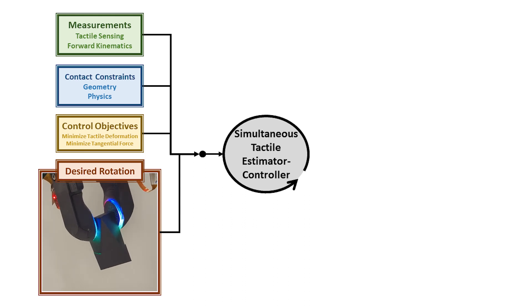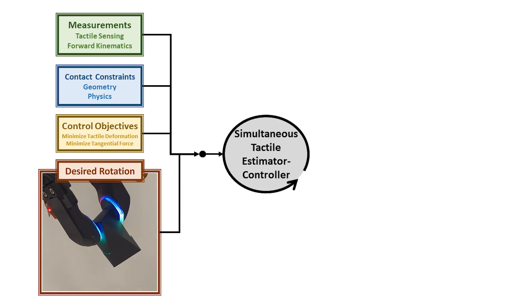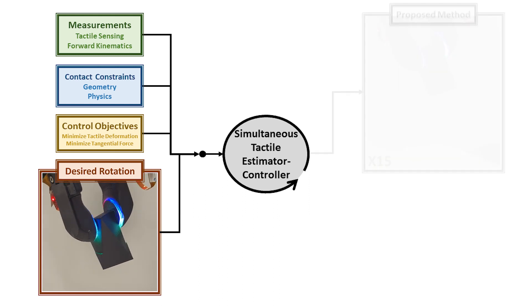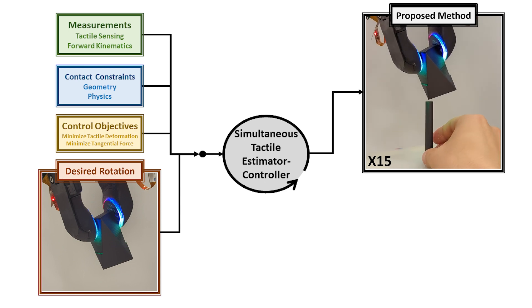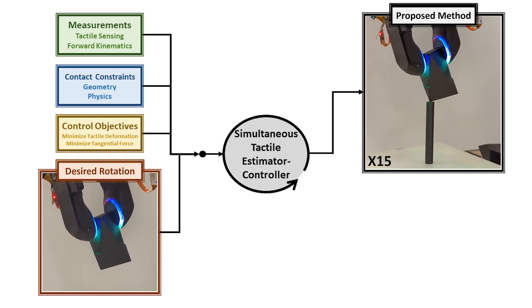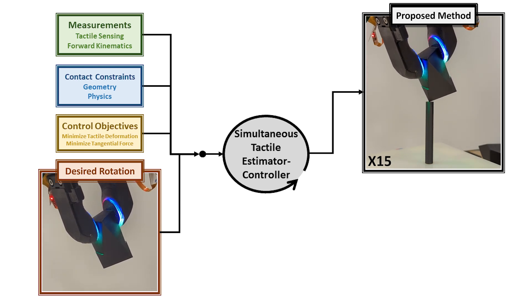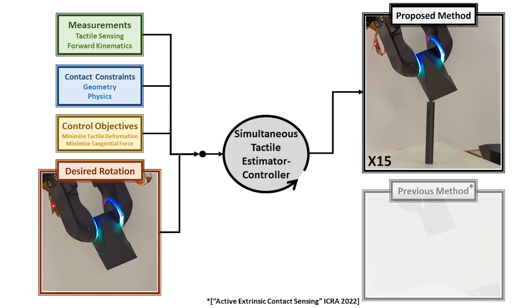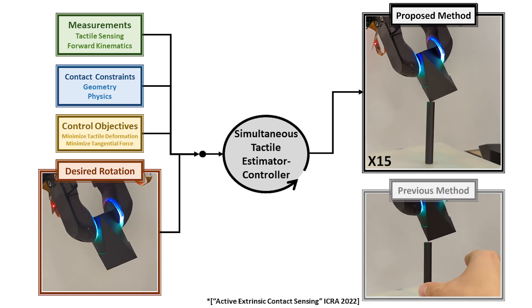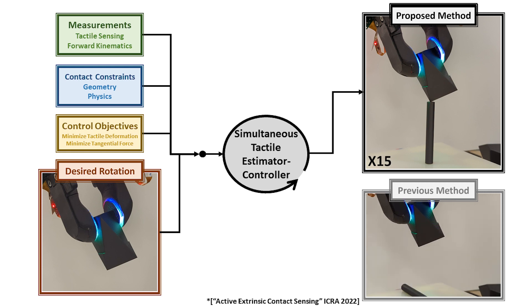We also input the desired object rotation based on where we want to tilt the object. As an output, the system outputs the estimated contact states for the past time steps and the control sequence for the future time steps. The video shows that, without prior knowledge of the location of the external contact, the system can pivot the object without moving the vertical rod. In contrast, if we use the controller from prior work, where the controller and estimators are independent, the rod falls due to the excessive tangential forces.